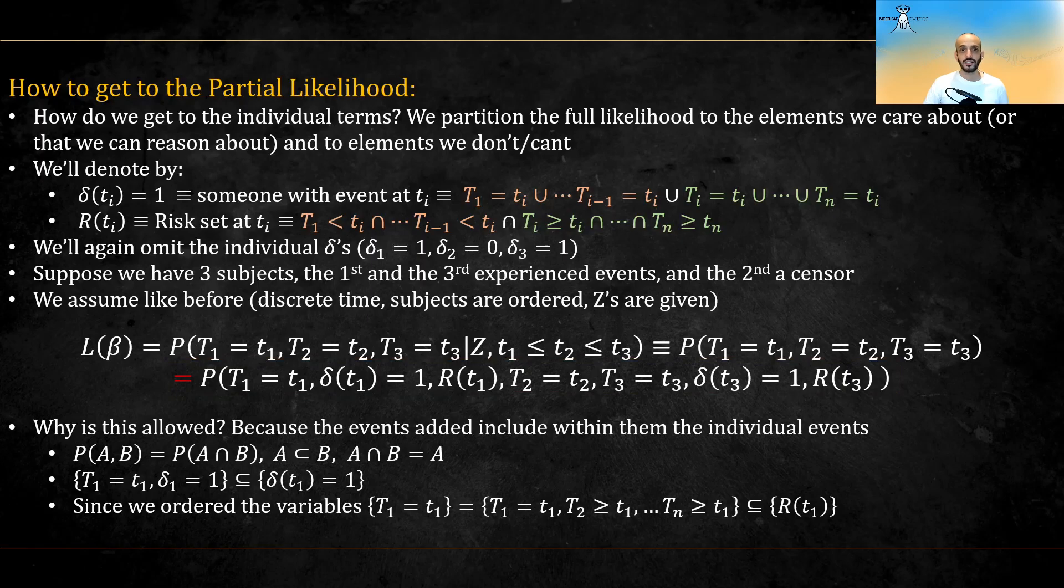Well, because we added events that are a superset of the current events. Remember that the comma is just a short form for intersection, and that if a set is a subset of another set, then their intersection will be the first set. Then, subject one had an event at time t1 is a subset of someone had an event at t1.